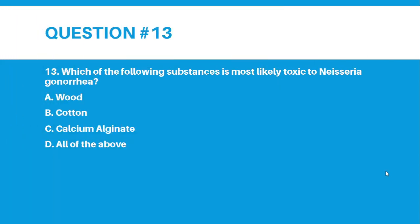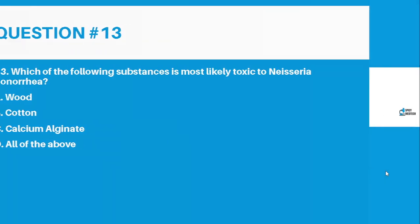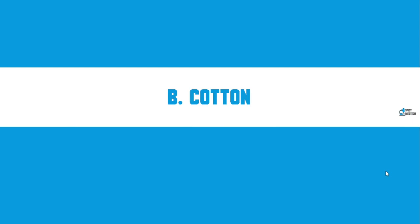Number 13. Which of the following substances is most likely toxic to Neisseria gonorrhoeae? Letter A, Wood. Letter B, Cotton. Letter C, Calcium alginate. Letter D, All of the above. And the correct answer for number 13 is letter B, Cotton.